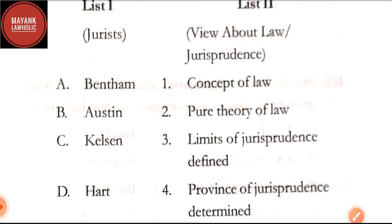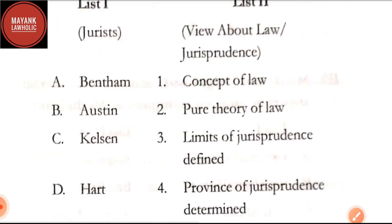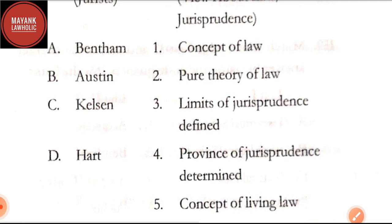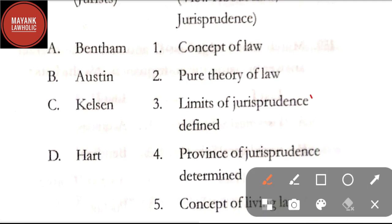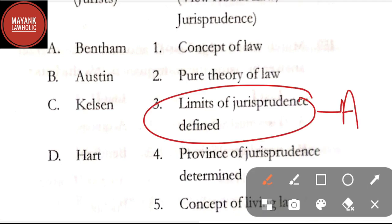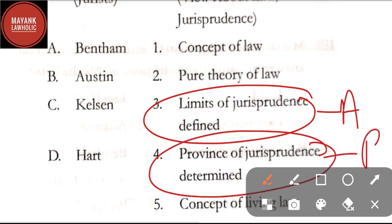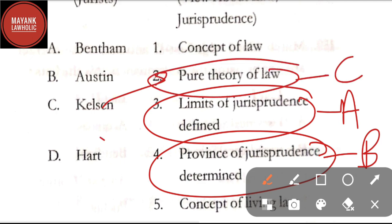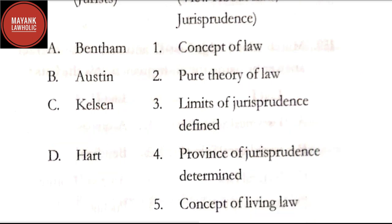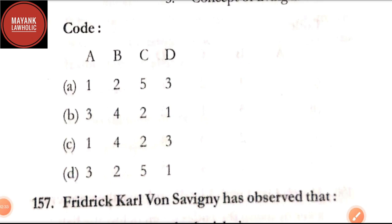Question number 156: match list one and list two — jurists and their views. Bentham talks about 'The Limits of Jurisprudence Defined'; Austin talks about 'The Province of Jurisprudence Determined'; Kelsen talked about pure theory of law or Grundnorm; Hart talked about 'The Concept of Law.' By going through these matches, the correct code is option B.